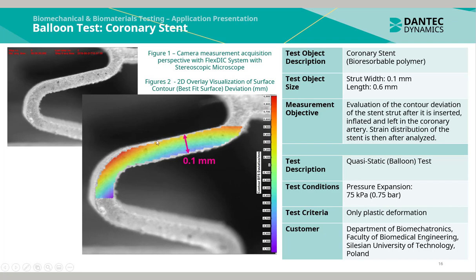The stent itself is approximately 0.1 mm in width and 0.6 mm in length. The measurement objective is to evaluate the contour deviation of the stent strut after it has been inserted, inflated and left in the coronary artery.